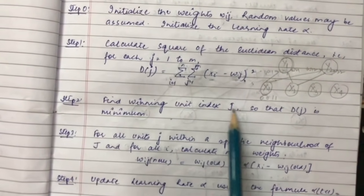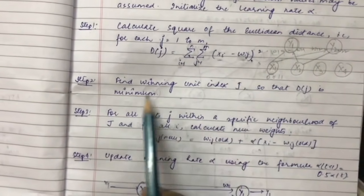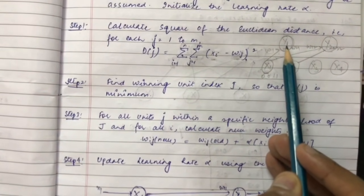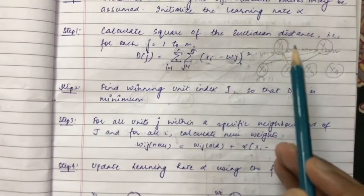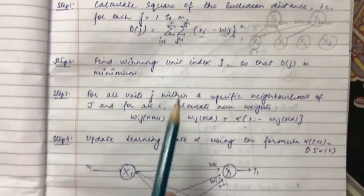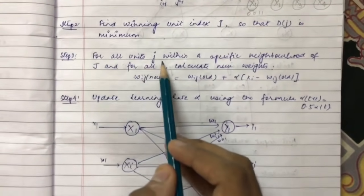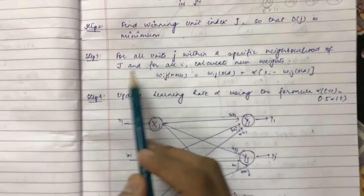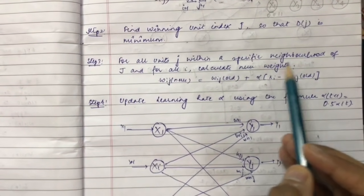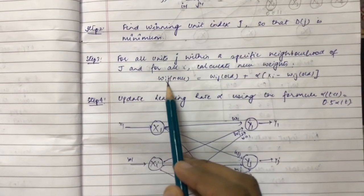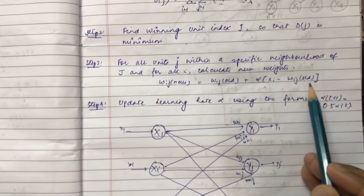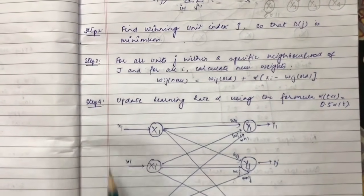Step 2: find the winning unit index j such that dj is minimum. Whichever distance between the cluster is lower, that particular cluster will be called the winning cluster. Step 3: for all units j within a specific neighborhood of j and for all i, calculate the new weights and apply weight update on the winning cluster.